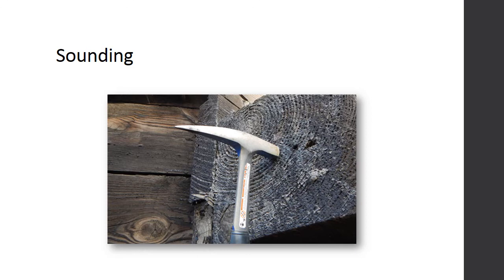To perform the sounding method, a hammer is used to strike the wood surface. Based on the tone, the inspector might be able to differentiate a hollow sound created by a void or pocket of decay from the tone created by striking sound wood. Some experience is necessary for reliable interpretation since many conditions can contribute to variations in sound quality. Sounding is best used in conjunction with other inspection methods.